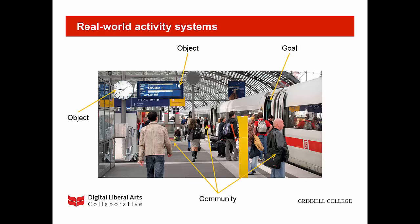A person in a train station may, for example, interact with objects and people located within the space with the specific goal of boarding a train on time. This individual will read signs, ask questions in German, and interact with other members of this train station community, such as conductors and ticket agents. This interaction will be influenced both by linguistic and sociocultural rules.